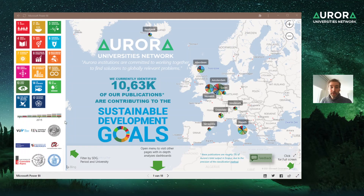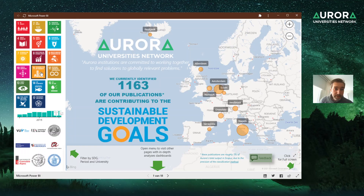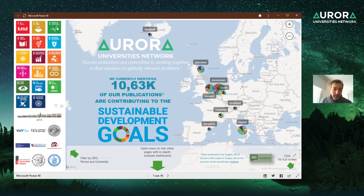First, I'll explain the layout of the dashboard. On the left bar you can see the SDGs — you can filter on the SDGs by just clicking on them. It then shows, for example, for Reduced Inequalities, where the most research of the Aurora universities has taken place. This is for Sustainable Cities and Communities, this is for Gender Equality, this is the SDG for Clean Water, etc.